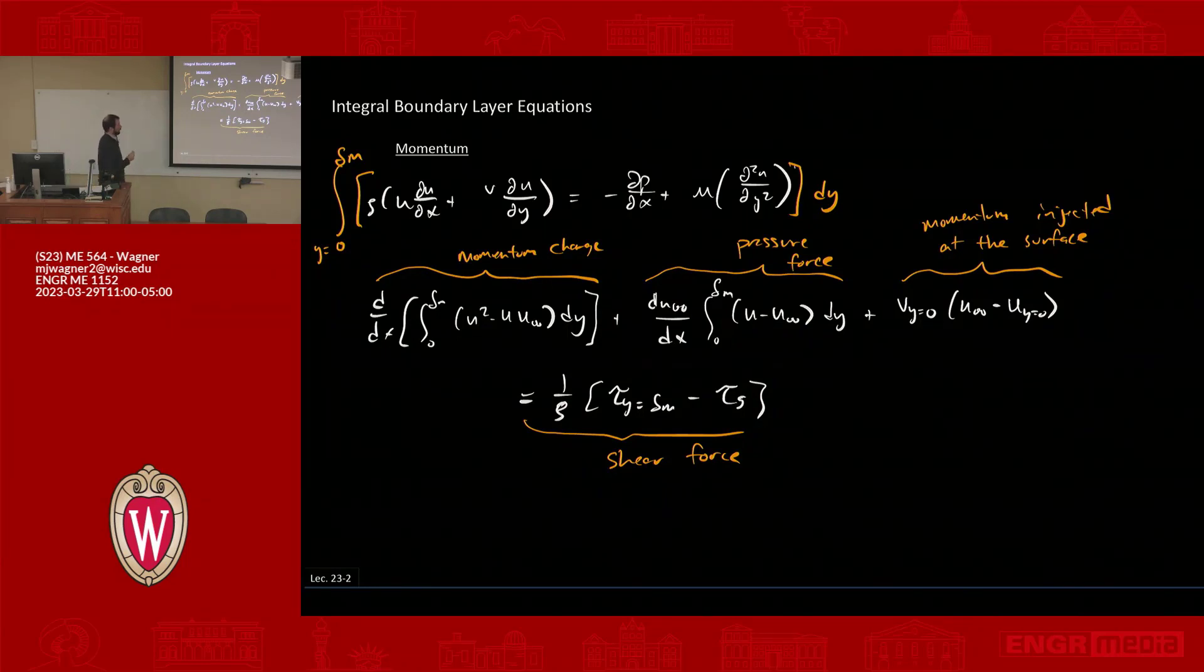Some interesting things here. What is this? Velocity at y equals zero. Why would velocity in the y component of a boundary layer that's flowing in x, why would there ever be a y component of velocity at zero?